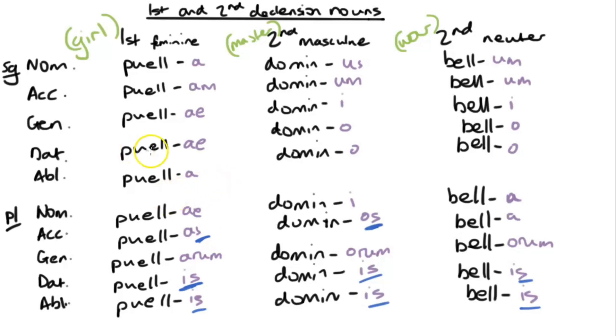And then you have the same in the accusative singular, but instead of an S, it's an M. So -am and -um. Again, the vowel is different, but the M stays. And in fact, in this case, in the neuter.